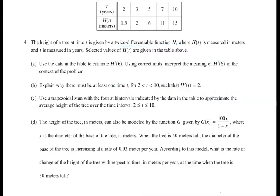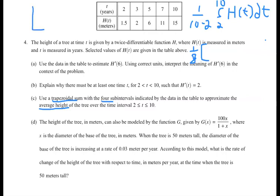Part C says use trapezoidal sum with four sub-intervals. So we're doing a trapezoid to approximate the average height. Average height means we're going to do 1 over 10 minus 2 integral from 2 to 10 of h of t dt. So we want to find that value right there. We're going to get 1 eighth and then multiply that by all of the trapezoids going across there. Since we have five of them and we need four, we're going to use every one of these.